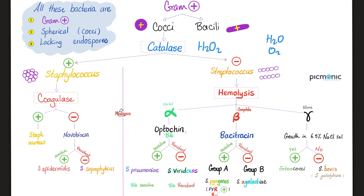How can you tell the difference? You have two options. You can subject them to optochin. If they are optochin-sensitive — i.e., the antibiotic killed the bacteria — that will be Streptococcus pneumoniae. If optochin did not kill it and the bacteria was resistant, you have found Streptococcus viridans. Another test is to subject both of them to bile. Bile will dissolve Streptococcus pneumoniae, but bile will not affect Strep viridans.